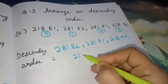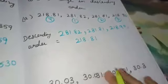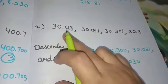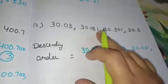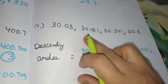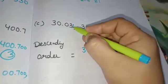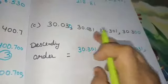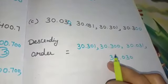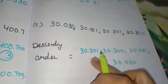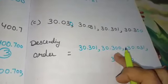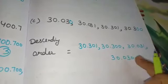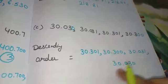In the same way, Part C has numbers 30.03, 30.03, 13.01. To make them like decimals we add zeros. Then comparing the whole parts: 30, 30, 30, 30 — all same. Then 301 is the biggest, 300 is next, 031 is smaller, and 030 is the smallest. So this is the descending order.